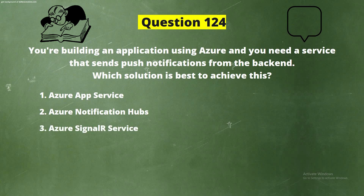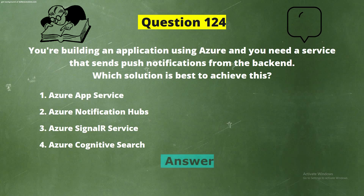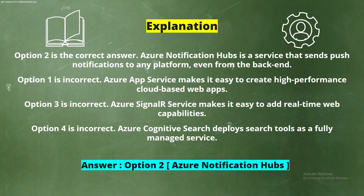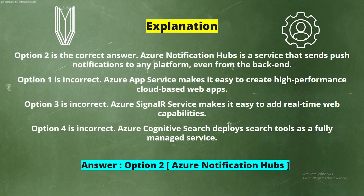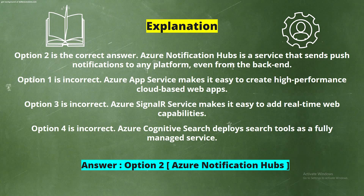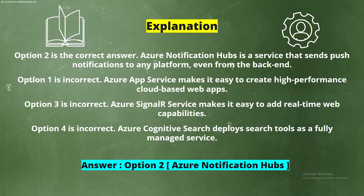Option 3, Azure SignalR Service. Option 4, Azure Cognitive Search. And the correct answer is Option 2, Azure Notification Hubs. Explanation: Option 2 is the correct answer. Azure Notification Hubs is a service that sends push notifications to any platform, even from the backend.